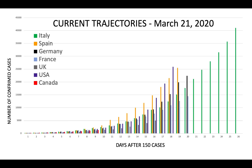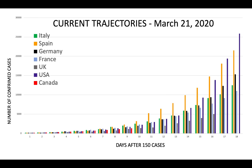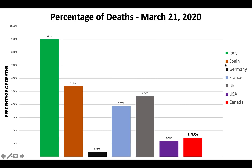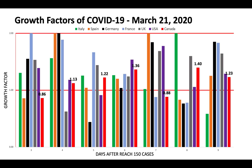Current trajectories as of March 21st, 2020 are roughly similar to yesterday. Everybody's still growing exponentially. Two things I want to point out again: number one, the United States has really taken off. Number two, Canada's growth is not too bad — we're certainly less than the United States, Italy, and Spain. The percentage of deaths as of March 21st was 1.43% in Canada and over 9% in Italy today. Growth factors are all roughly above one still; Canada was 1.23% today.